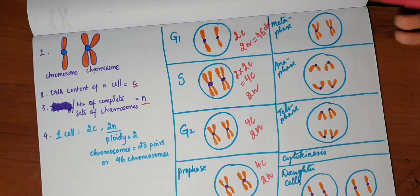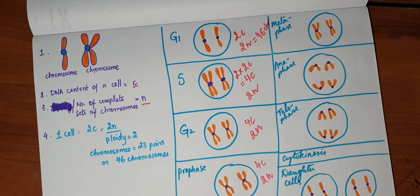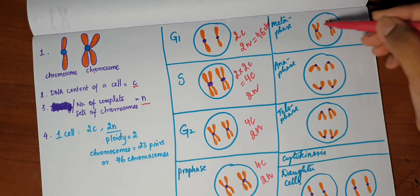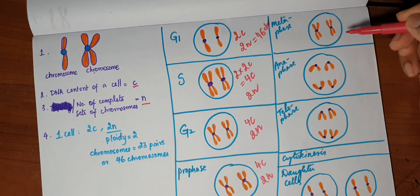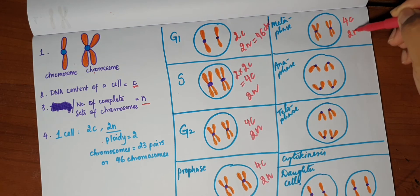Now coming to metaphase. Metaphase again, the same as prophase. Nothing else happens except that they are aligned at the metaphase plate. So 4c, 2n again.